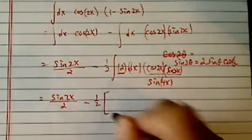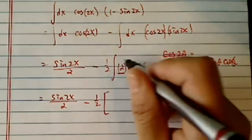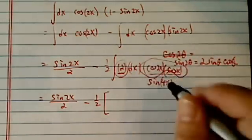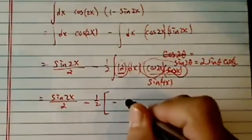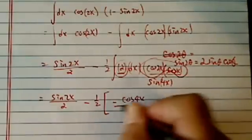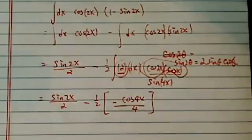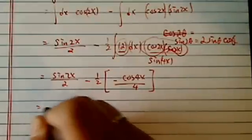Minus half and then this combines together into sine. So that's minus cosine of 4x divided by 4. Copy this one down.